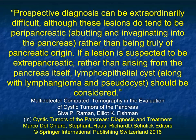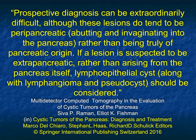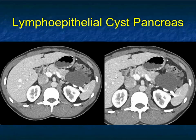In this article, we wrote about cystic pancreatic lesions, and prospective diagnosis can be extraordinarily difficult, although these lesions do tend to be peripancreatic rather than truly of pancreatic origin. If a lesion is suspected to be extrapancreatic rather than arising from the pancreas itself, lymphoepithelial cysts should be considered. One thing we've often seen is that if you tissue sample a lymphoepithelial cyst, patients often get really bad pancreatitis.